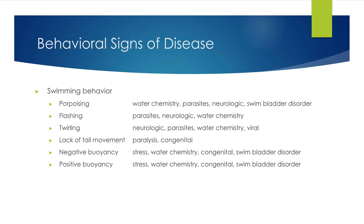Here is a short list of possible causes for all of these different swimming behaviors. As you can see, they are not quite straightforward — many different issues can cause various behavioral changes. If you ever notice your fish doing one of these behaviors, the first thing we're going to tell you is to check your water chemistry, because this is one of the most common causes of behavioral signs of disease in fish, listed in almost all categories. If everything looks good there, it's really worth having a professional come out to narrow down the broad categories potentially causing problems.